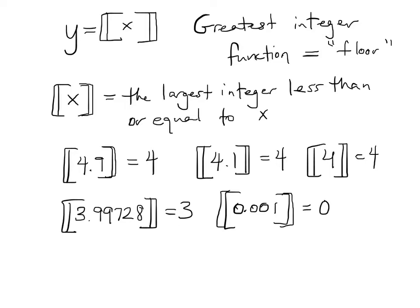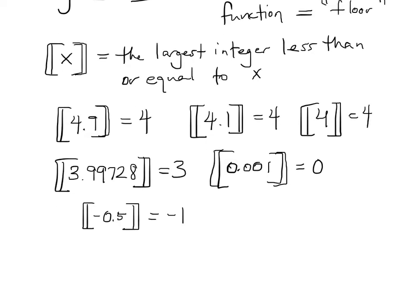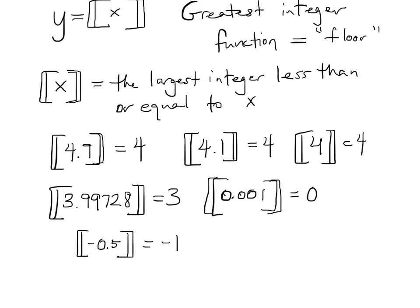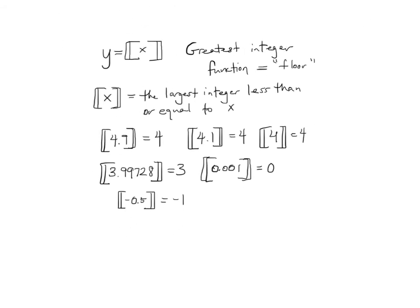When we get into negatives, it gets a little counterintuitive until you think about it for a second. The largest integer less than negative 0.5 would be negative 1, because if we were to go to 0, that would be bigger than negative 0.5. So there are some examples.